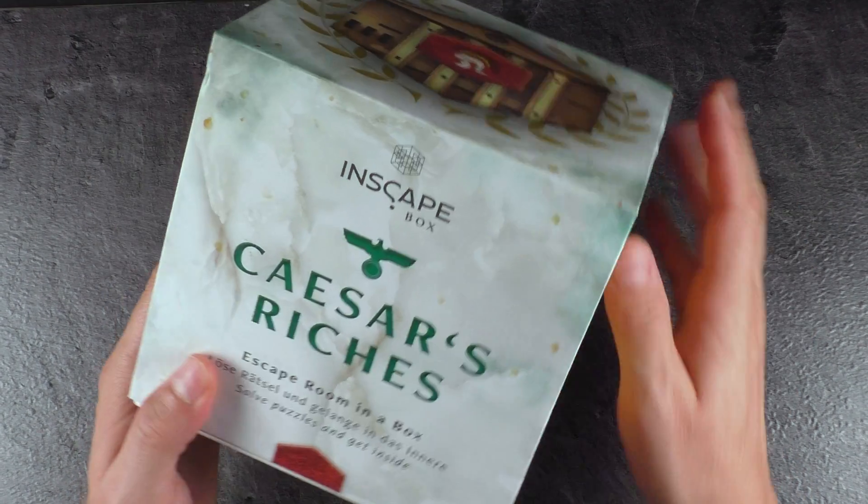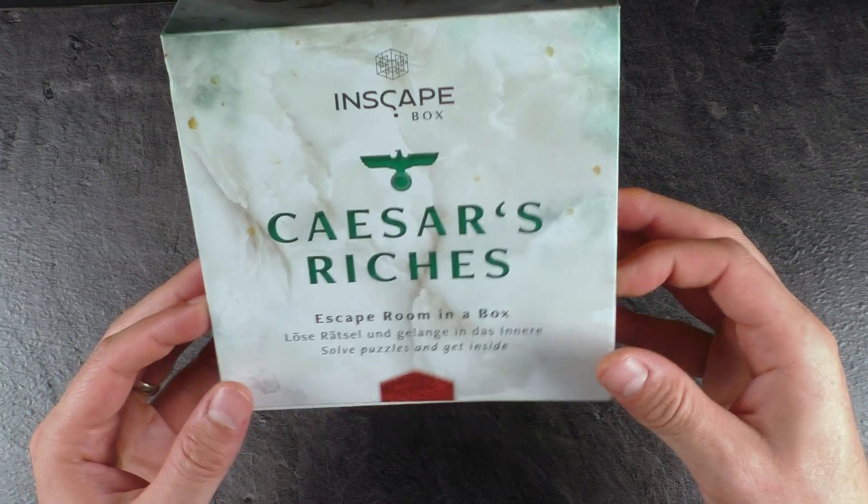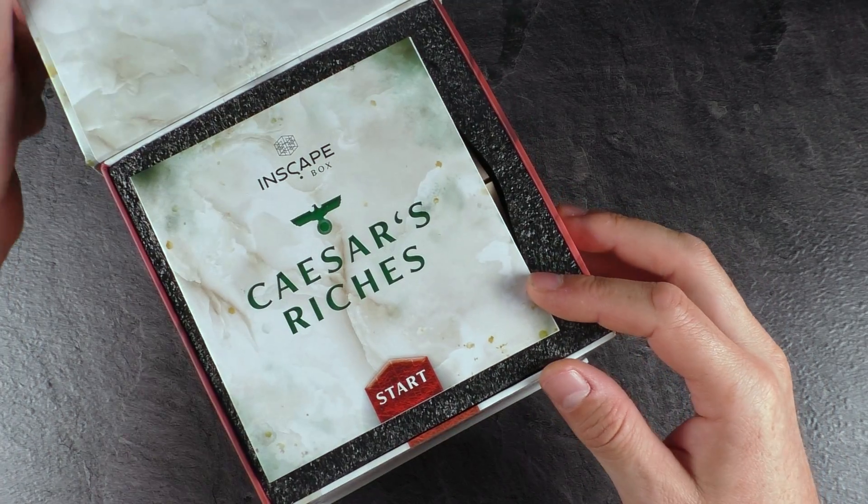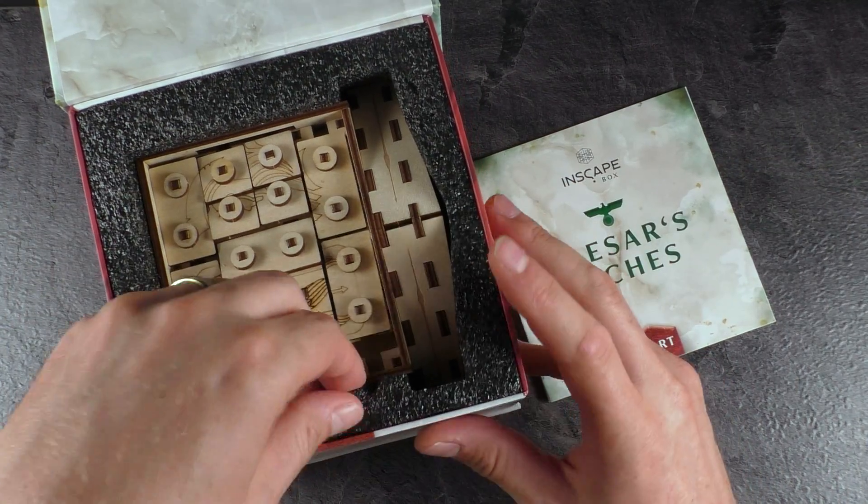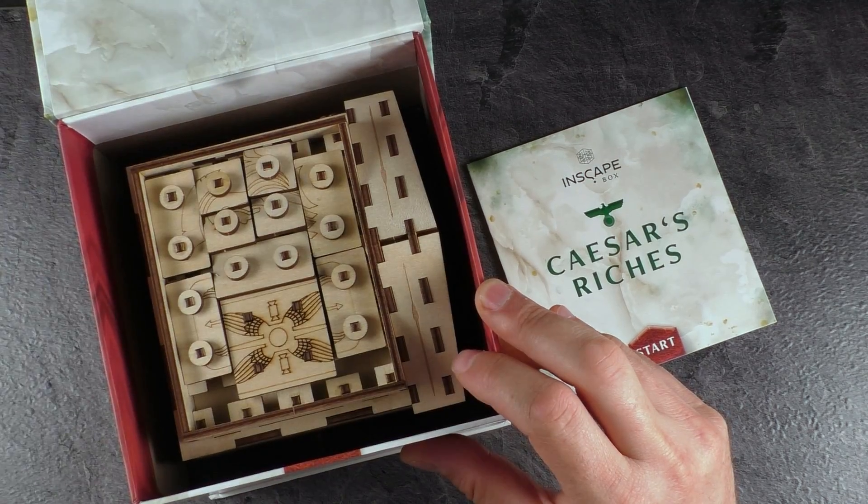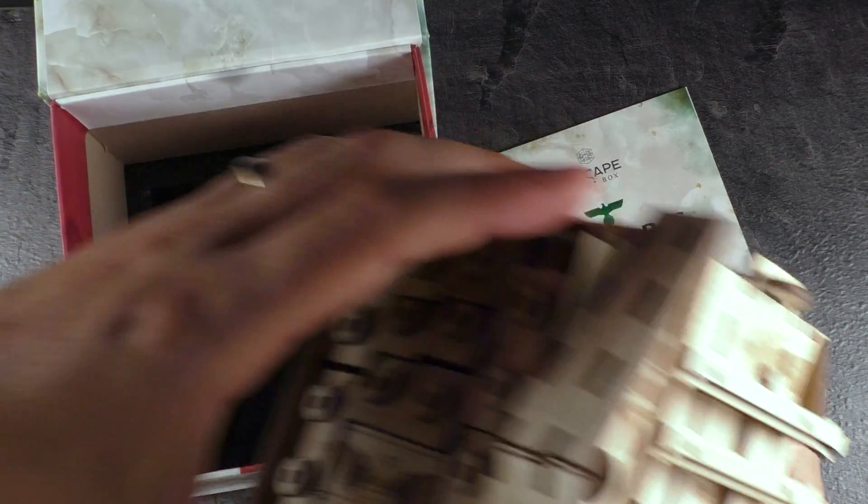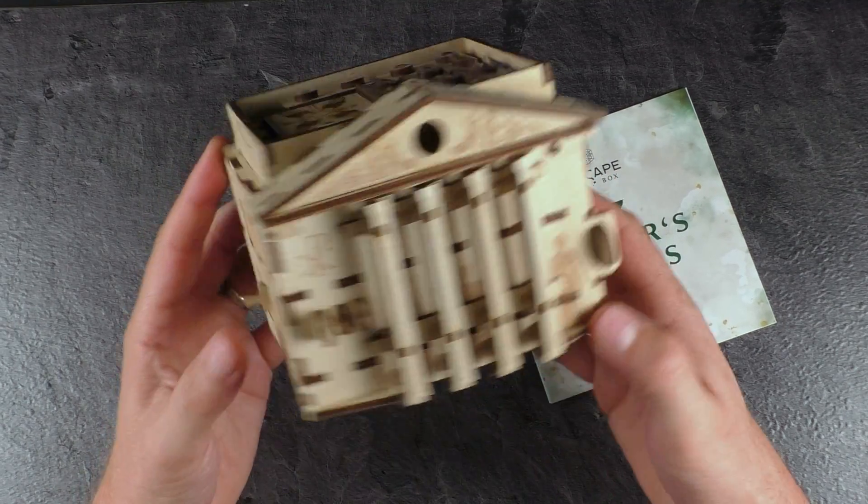So what I really like is the boxing because it's quite a high quality box with a magnet here inside that keeps it closed. Also inside, there actually can happen nothing to the puzzle because it's quite well protected here from getting damaged. So when I take this thing out, this is what it looks like.